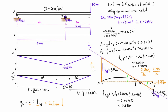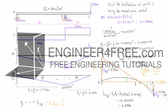Depending on your sign convention — if positive y is defined as upward — you would indicate this deflection as negative. The negative doesn't always show up explicitly, but watch out when doing this that your signs are correct. You want to make sure you're not adding a positive and a negative value when really they're summing as two parts of one measurement in the same direction.